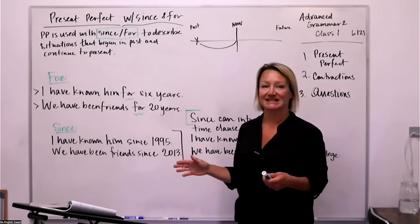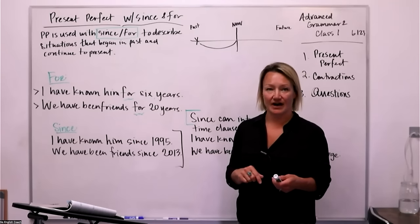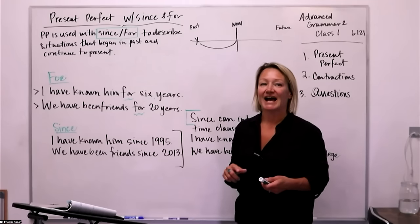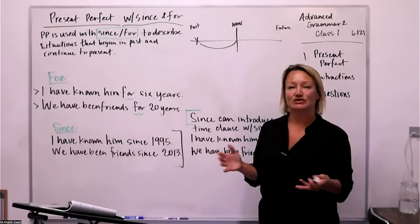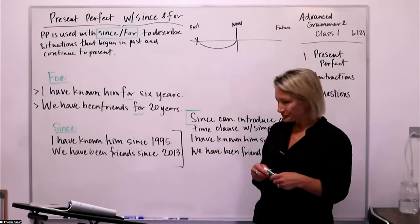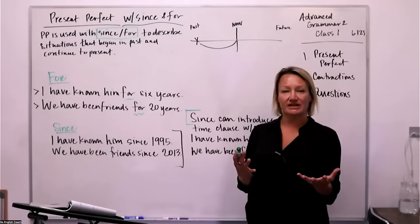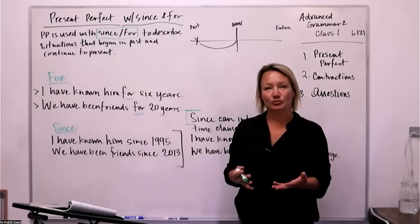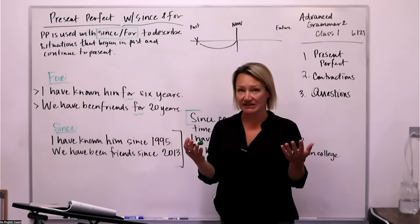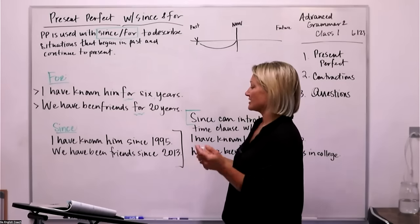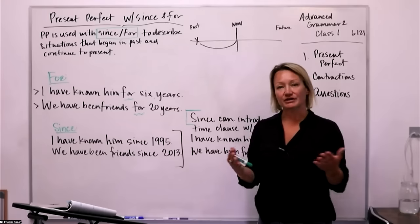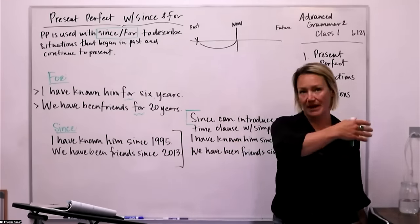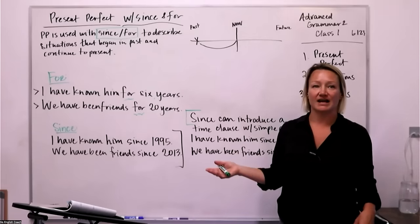I have known him since 1995. And we have been friends since 2013. So what do we notice about when we use 'for' and when we use 'since'? It's pretty similar — it's kind of describing a period of time. You're describing that it started in the past and you are still friends today.